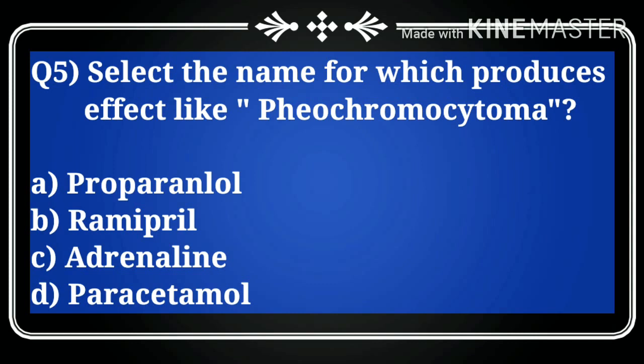Question number five: select the drug which produces effects like pheochromocytoma. Which one of the following drugs produces this effect? Options are: A) propranolol, B) ramipril, C) adrenaline, D) paracetamol. Our correct answer is C, adrenaline, as adrenaline produces effects similar to pheochromocytoma.